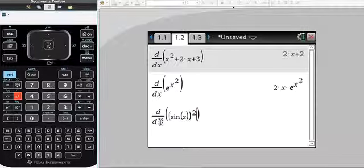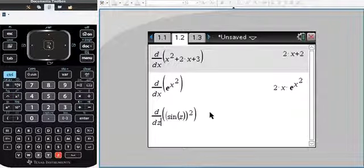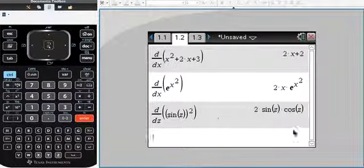This time the variable was z, so we pop a z in and then press enter. You can see the answer that we got was 2 sine z cosine z.